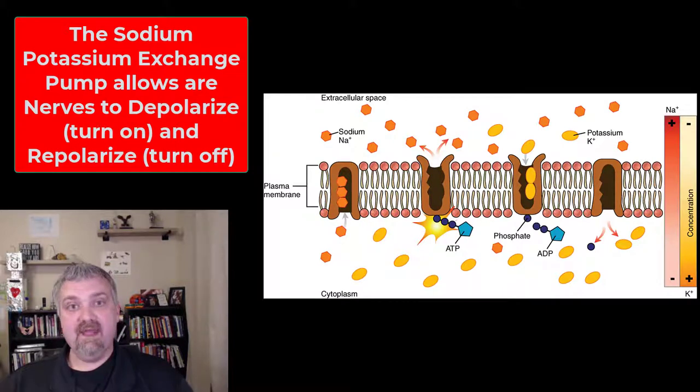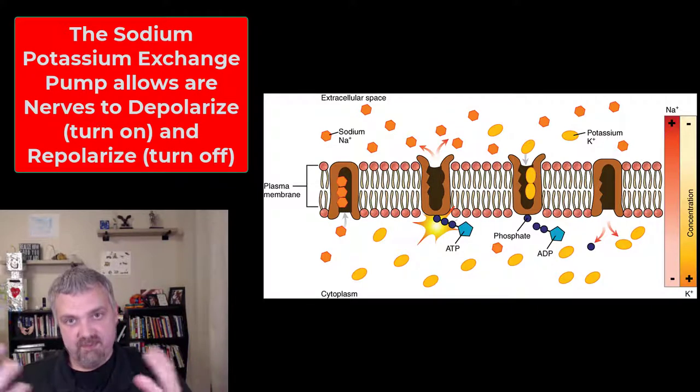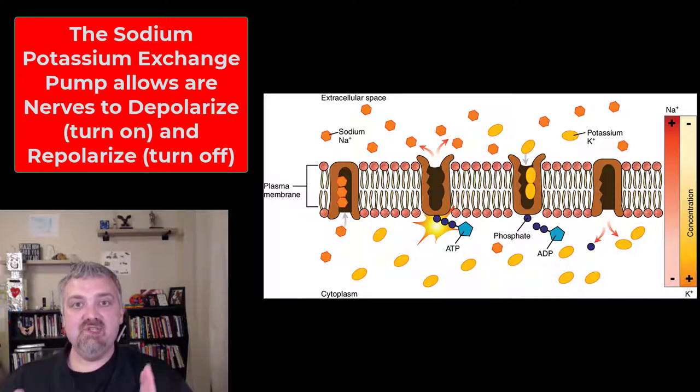This is why, as we'll learn later, that a resting nerve or a nerve that's ready to depolarize has a charge of negative 70 millivolts, because you're pulling more positive sodium out of the neuron than you're replacing with positive potassium. So that's the sodium-potassium exchange pump, a great example of active transport.